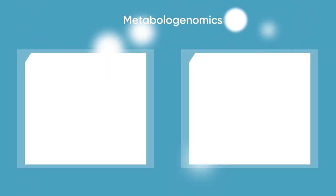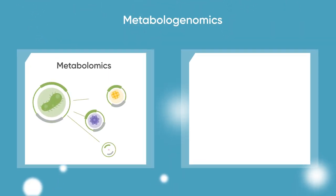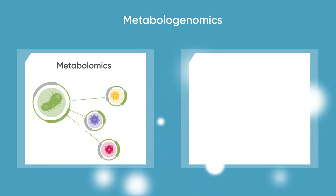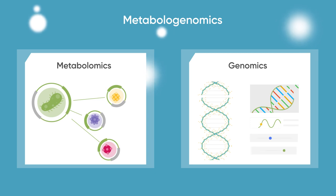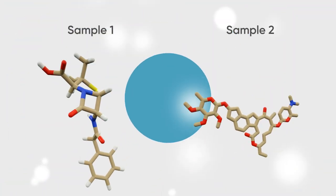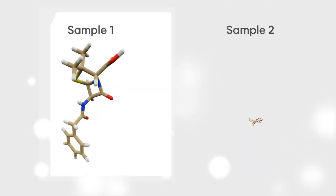Metabologenomics combines two fields. The first is metabolomics, where we study metabolites produced by bacteria. The second is genomics, sequencing bacterial genomes. We then use advanced analytics to determine which gene clusters produce which molecules.